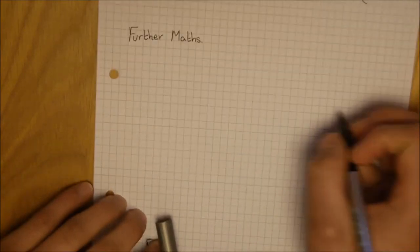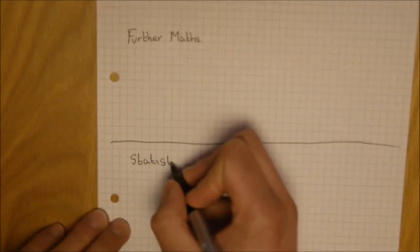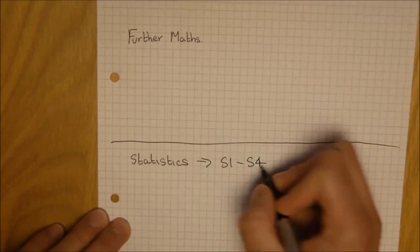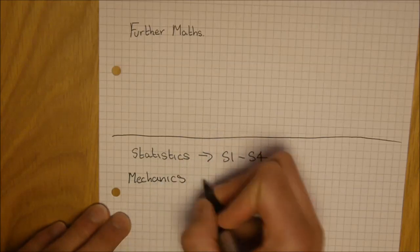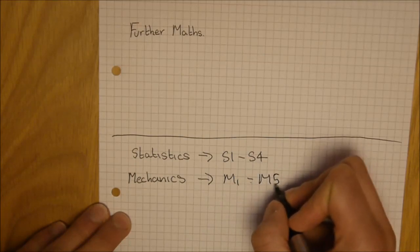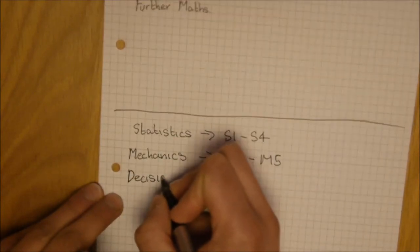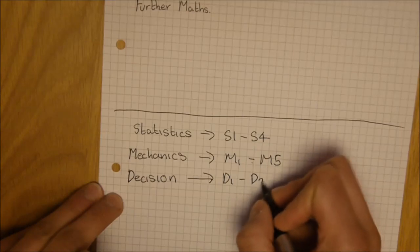Now, I have just moved to the bottom of the sheet here. The applied units are stats or statistics, and they go from S1 to S4, mechanics which go from M1 to M5, and decision, which is just D1 and D2.